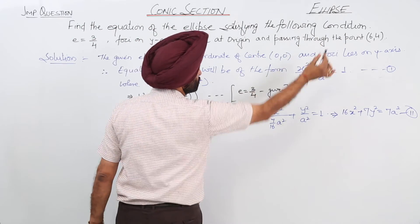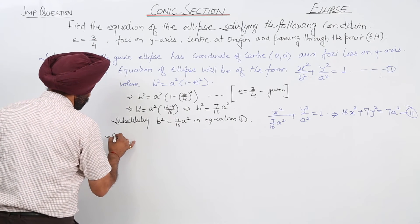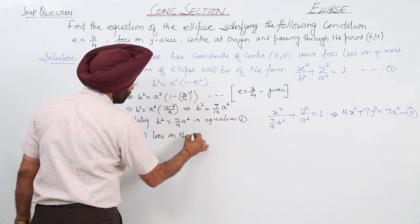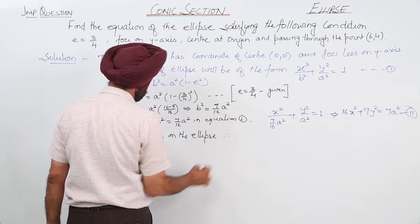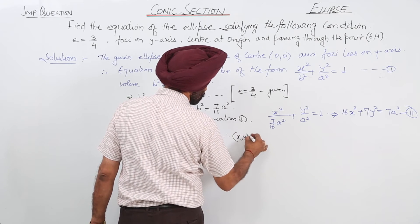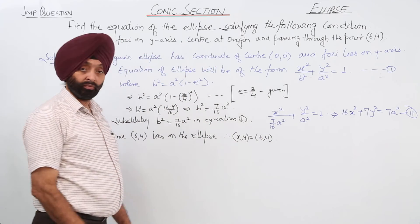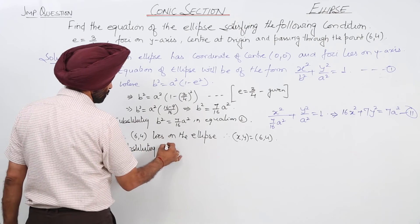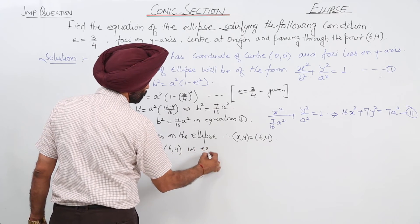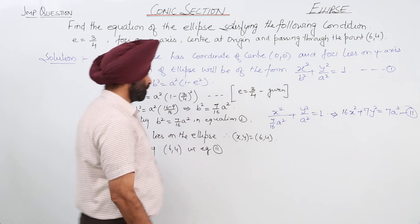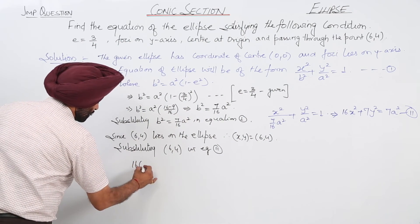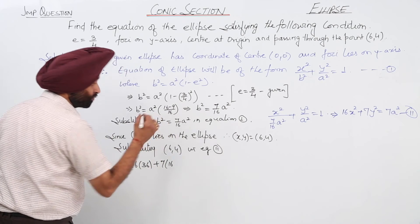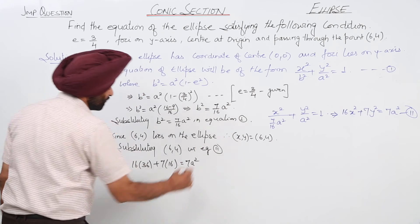Now, it passes through the point (6, 4). Since (6, 4) lies on the ellipse, substituting (6, 4) in equation 2: 16 times 36 (that is 6²) plus 7 times 16 (that is 4²) is equal to 7a².